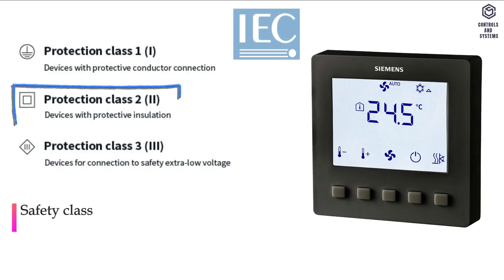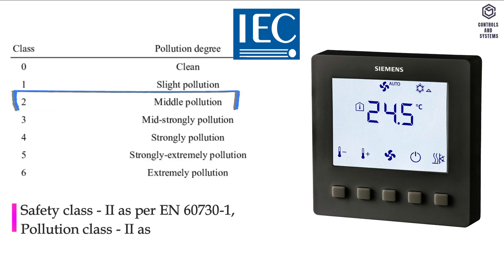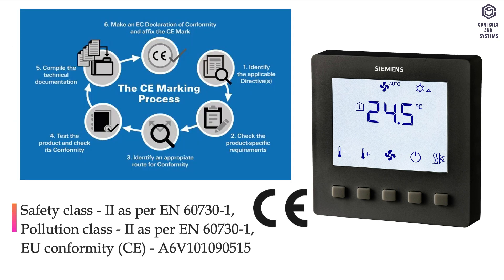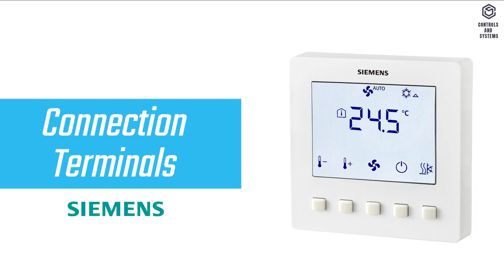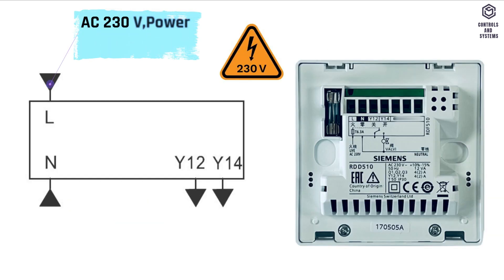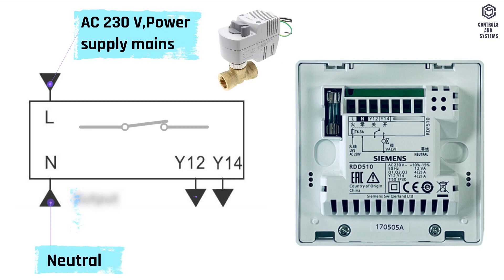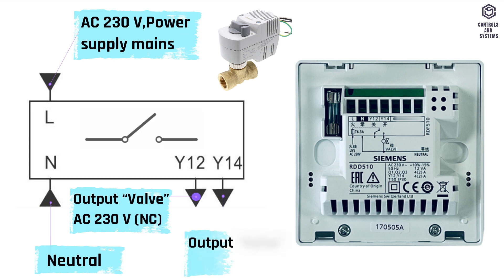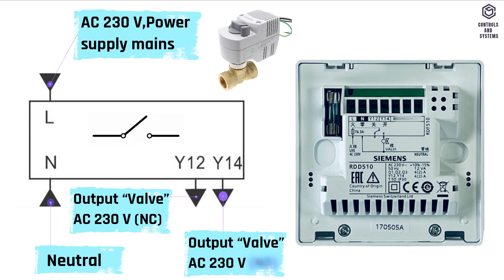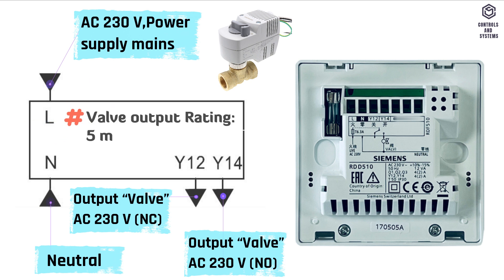Other data: safety class 2, pollution class 2, EU conformity CE, environmental compatibility noted. Connection terminals: L = line AC 230 V power supply; N = neutral; Y-12 = valve output AC 230 V normally closed contact; Y-14 = valve output AC 230 V normally open contact. Valve output rating is 5 milliamps to 2 amps.